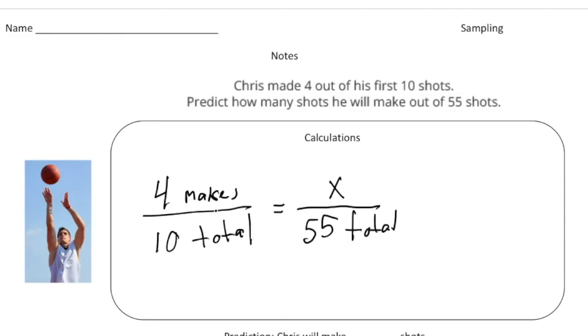And remember, the way you solve proportions is the cross products are equal. So 10 times x is going to equal four times 55, which is 220. And then I'm going to solve both sides by dividing by 10. And you get x equals 22. Now, this is just a prediction. It doesn't mean Chris is going to make exactly 22 shots, but it means it's probably pretty close to what he would make.